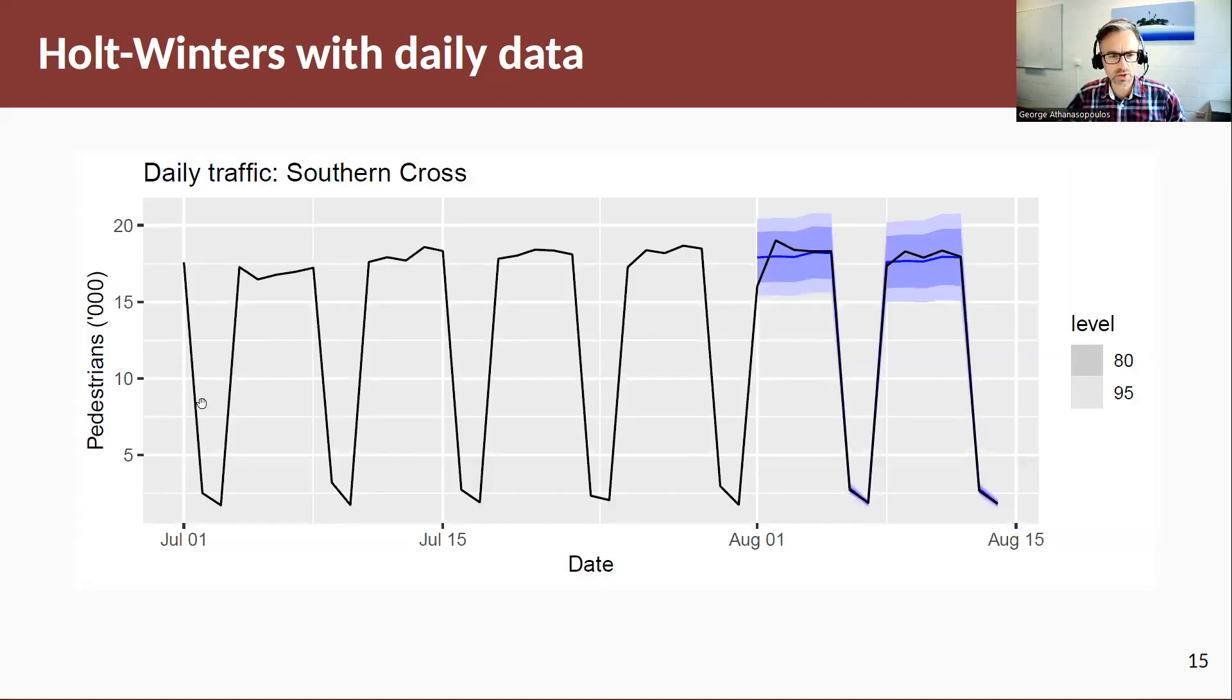So here's the data. So this is daily data, hence the troughs down here are weekends. The peaks are on weekdays. And we forecast the last two weeks and the blue lines here are our forecasts. And hence we see that it does, these do pretty well in generating forecasts for this type of data.